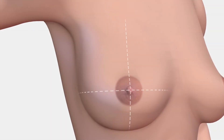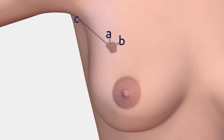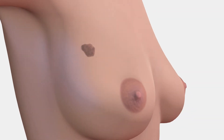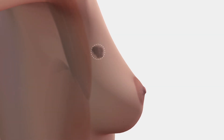Planning for hidden scar lumpectomy includes a conscious thought process for each case. Visualizing the three-dimensional orientation of the lesion will help select the best hidden scar incision for ease and feasibility. When reviewing the breast imaging, first note the shape, size, and location of the tumor. Second, note the distance of the tumor from the skin, pec, and the site of the incision.